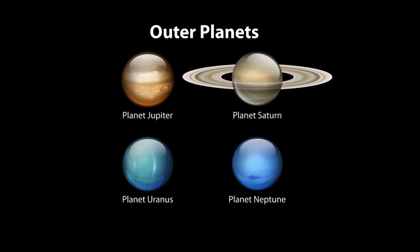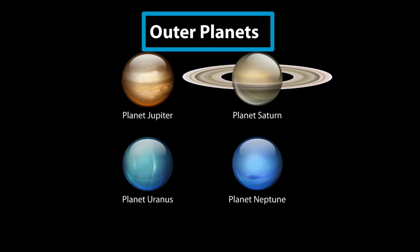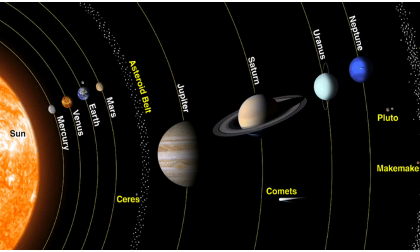Jupiter, Saturn, Uranus, and Neptune are called outer planets. Earth is the third planet from the Sun in the solar system. Earth has air to breathe and water for living things to use.